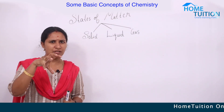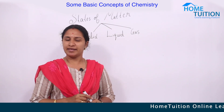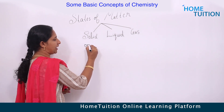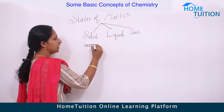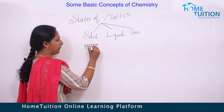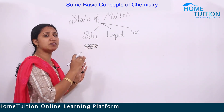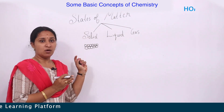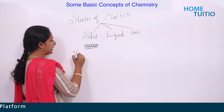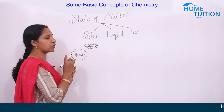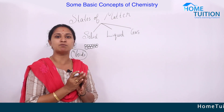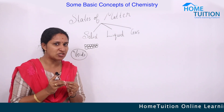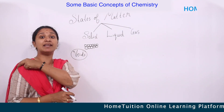In solid state, the particles are very closely packed and there is no interstitial space — or voids — between these particles. Because they are so closely packed, solids have a definite shape and size.